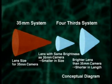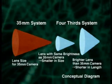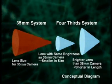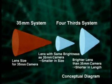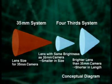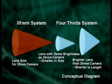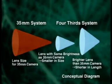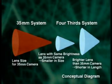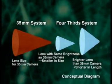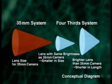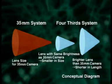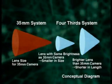Moreover, since the effective aperture of the lens can be made smaller compared to that of 35mm film cameras, bright lenses can consequently be made much shorter in length. This will give users more flexibility when shooting in low-light conditions or with a high-speed shutter.